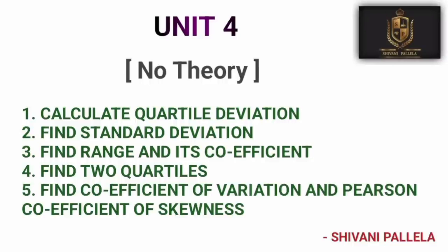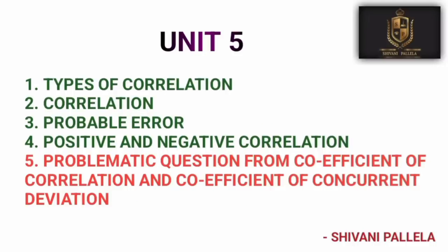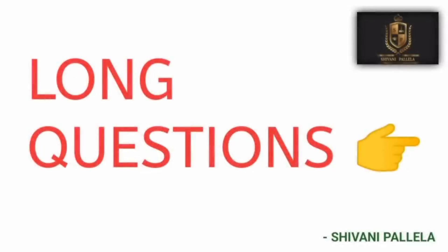From unit five, theory questions expected include 'What is Correlation?' and types of correlation. For problems, coefficient of correlation and concurrent deviation are the key topics. Both of these are already covered in the Part B long questions, so concentrate on long questions since Part B carries 60 marks and passing is around 32 to 35 marks.